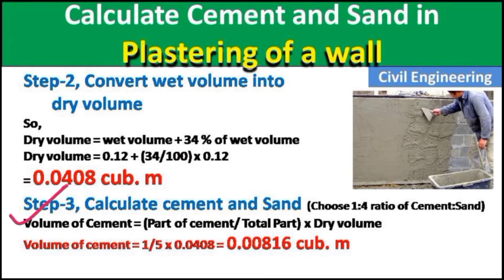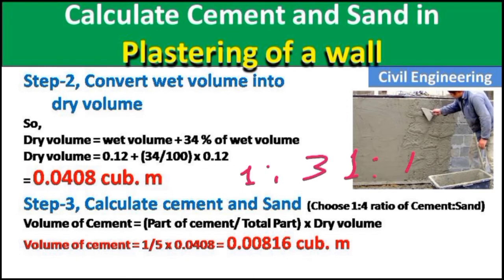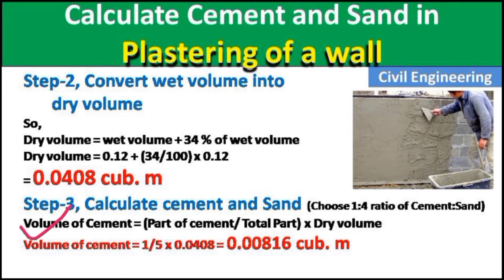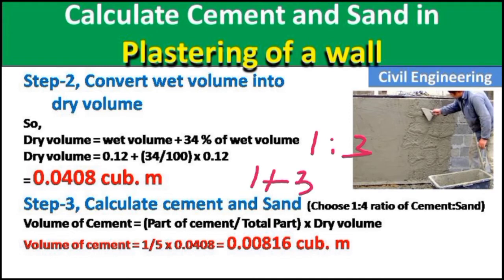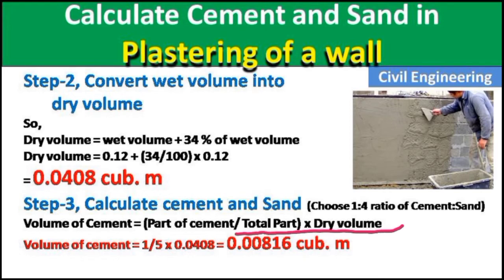In step number three, we calculate cement and sand. I am choosing a 1:4 ratio of cement to sand. You can use 1:3, 1:4, or 1:5 — here I am using 1:4. Volume of cement = (part of cement / total parts) × dry volume. Part of cement = 1, total parts = 1 + 4 = 5.